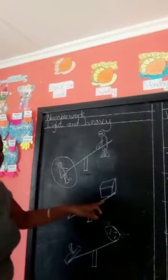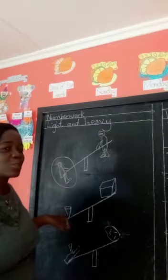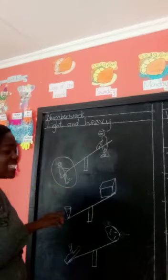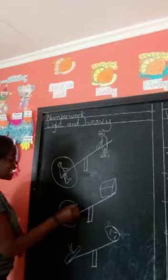And then we have a box and a bucket. So which one is heavy between these two? It is the bucket. That's why it's down. So we circle it.